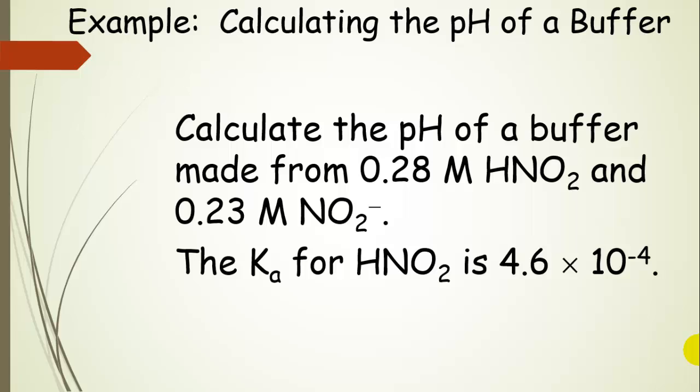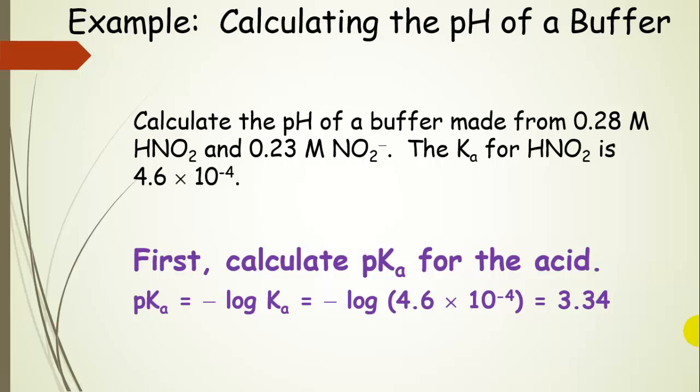Let's do an example because that's the easiest way to discuss this. So we're going to calculate the pH of a buffer that's made from 0.28 molar nitrous acid and 0.23 molar nitrite. So notice this is a conjugate acid base pair and the concentrations are approximately equal. The Ka for nitrous acid is 4.6 times 10 to the negative 4.